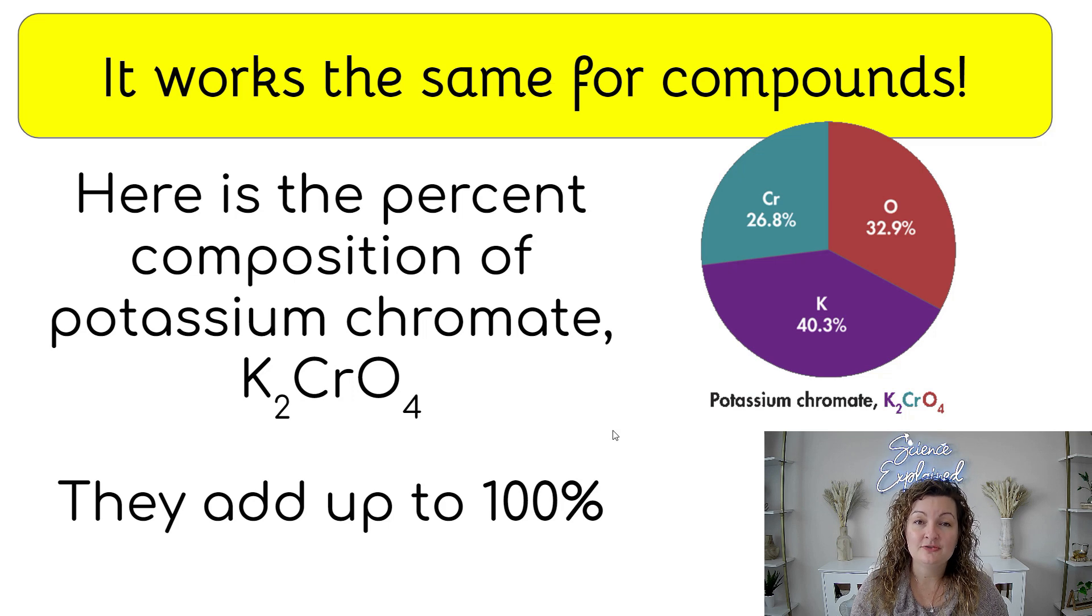So this also happens for compounds. If you look at this example, we have potassium chromate, which is K2CrO4.